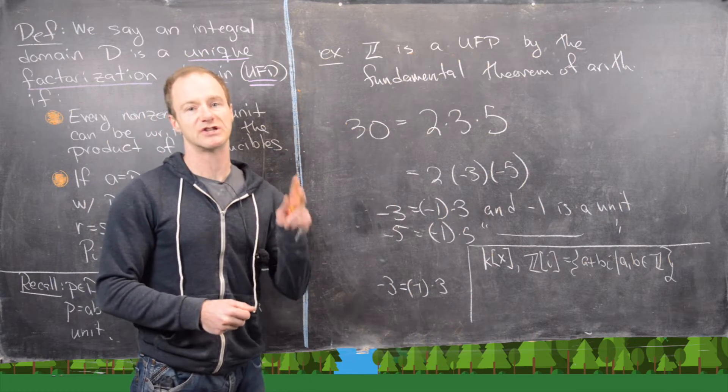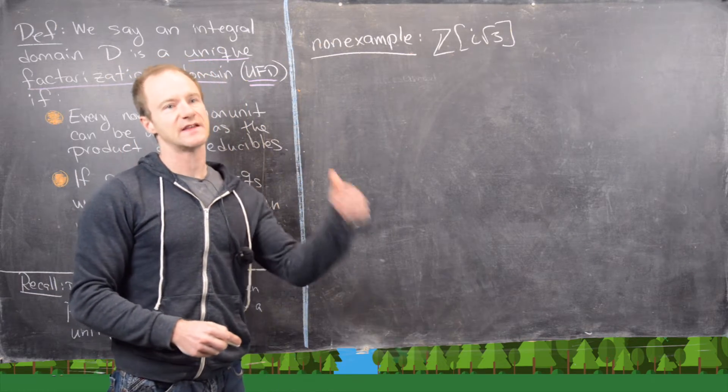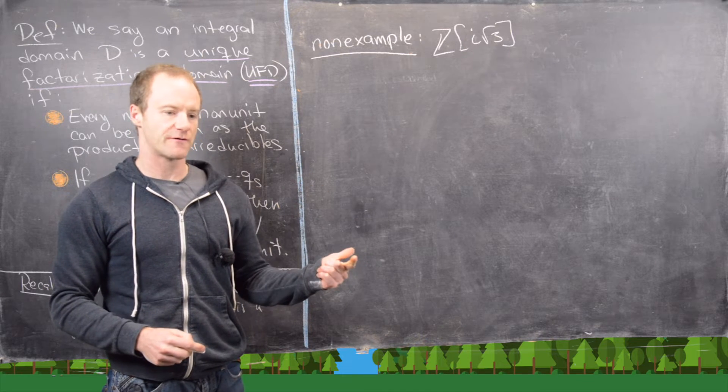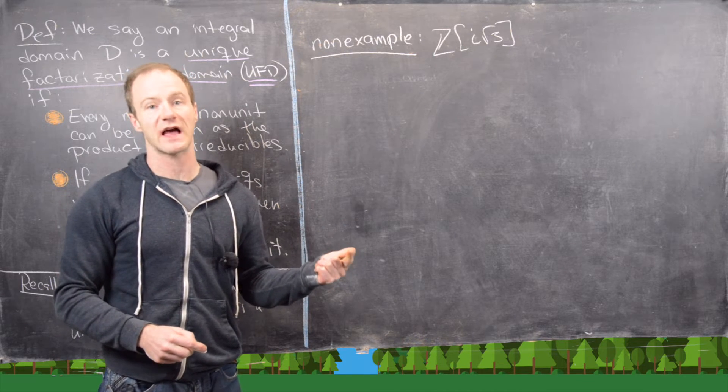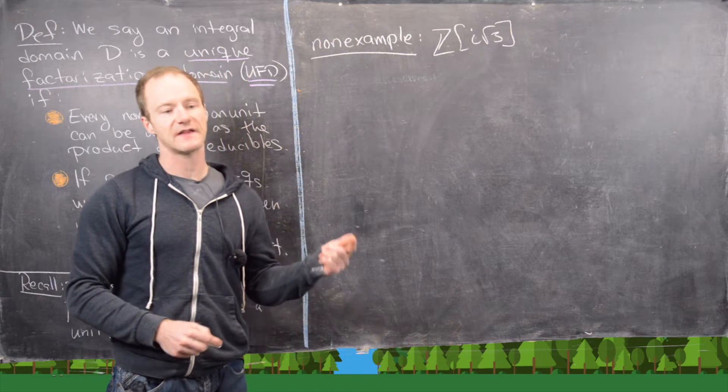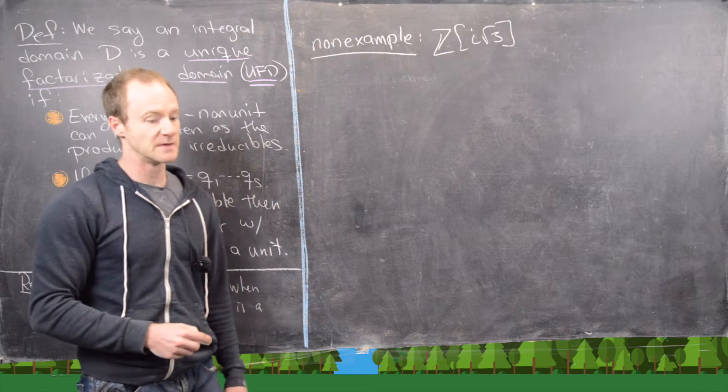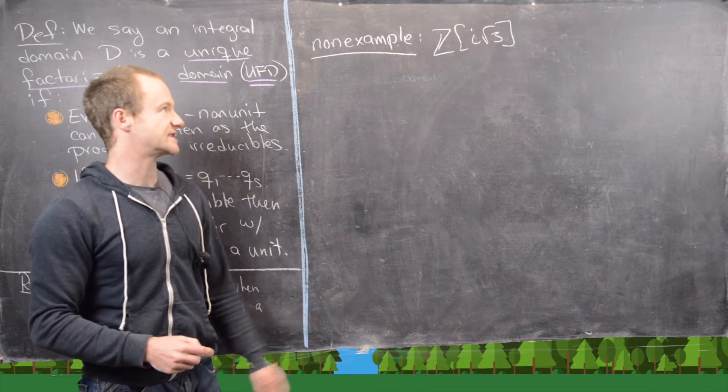Okay, I'm going to erase the board, and then we'll look at two non-examples. We just saw three examples of UFDs, the integers, polynomials over a field, which we didn't really look at very carefully because that's going to rely on a bigger result, and the Gaussian integers. Again, we didn't look at that carefully because that's also going to rely on a bigger result. So now let's go ahead and look at two non-examples.